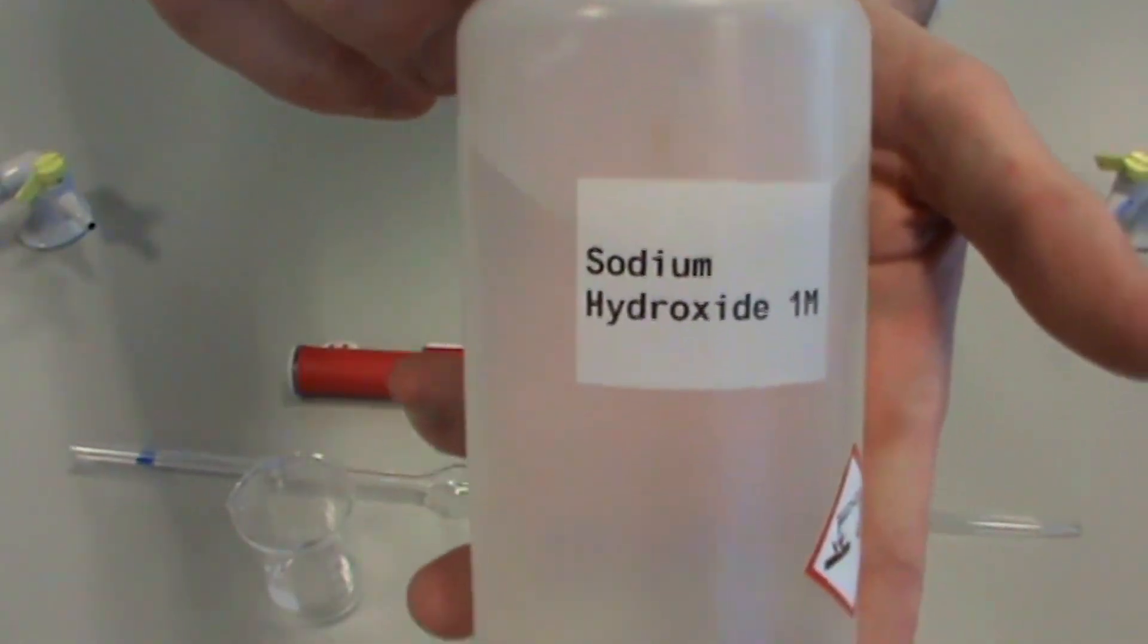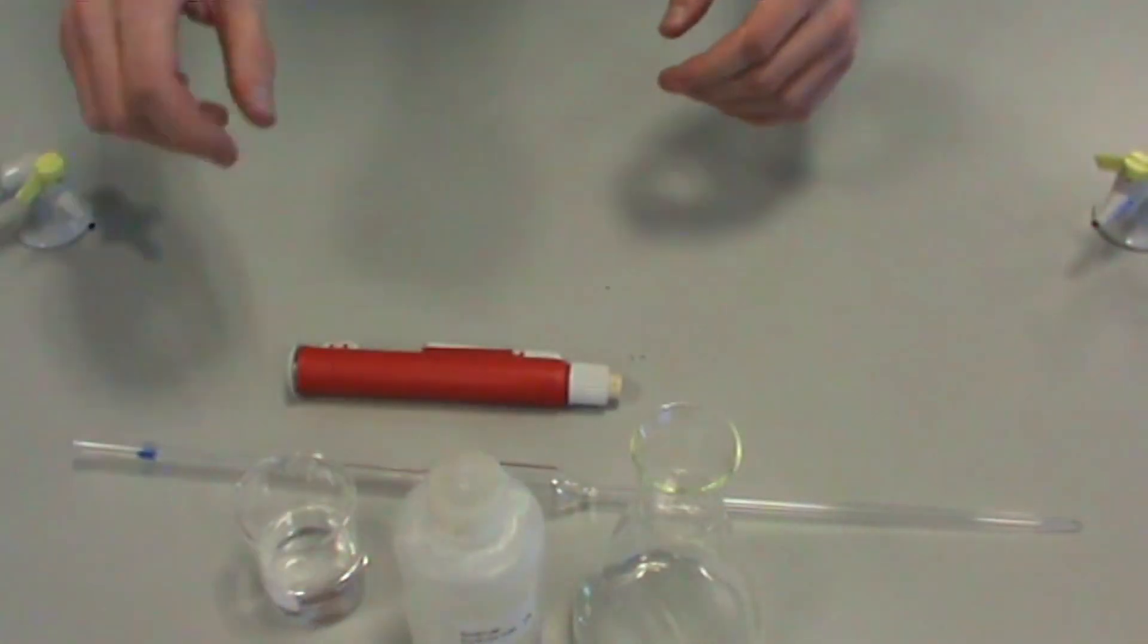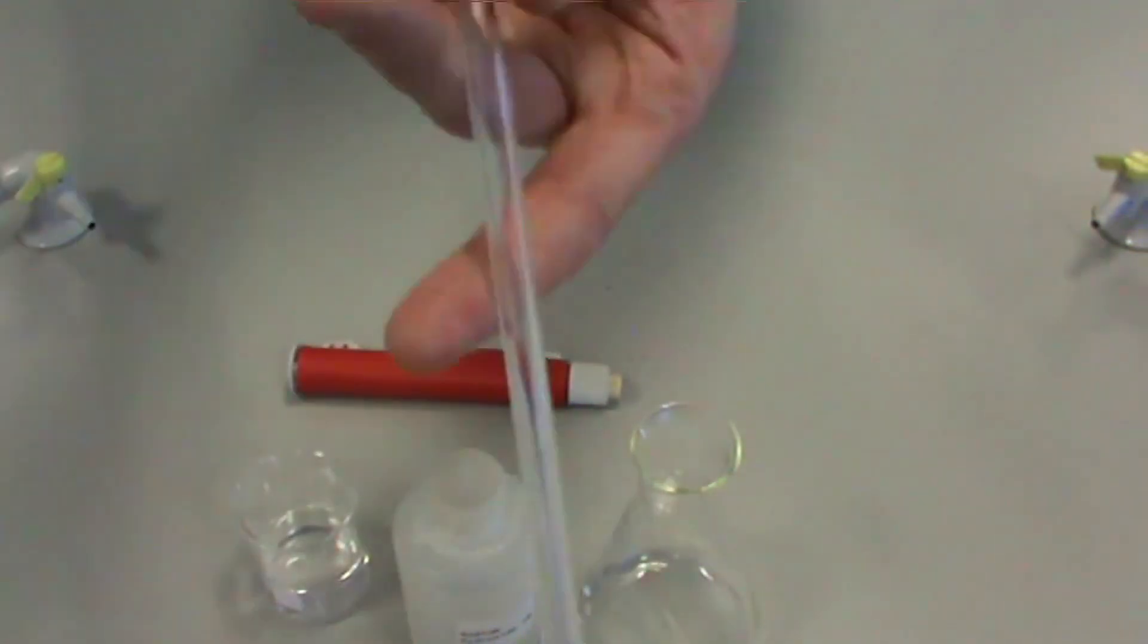To begin, pour some of your sodium hydroxide solution into a beaker. This makes it easier when pipetting in the next stage.